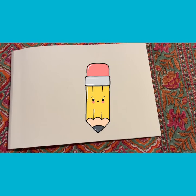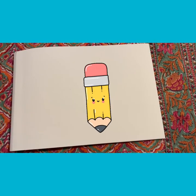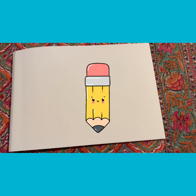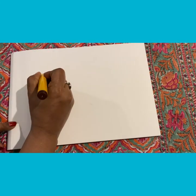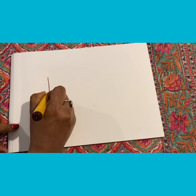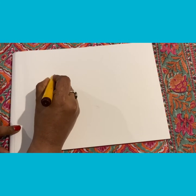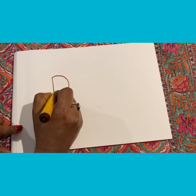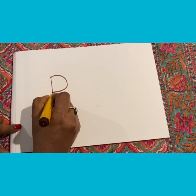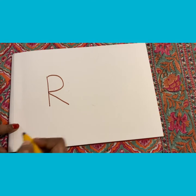Alright, so now let's see how we write letter R. We will start with the standing line, and then a curve, and then we go down — letter R.